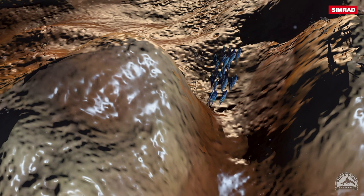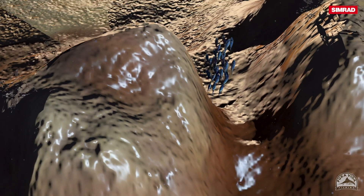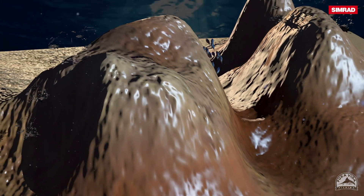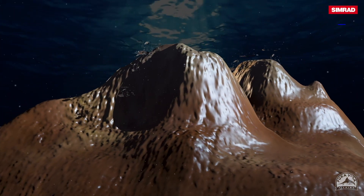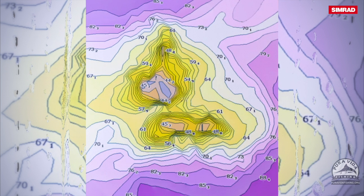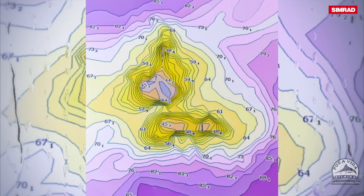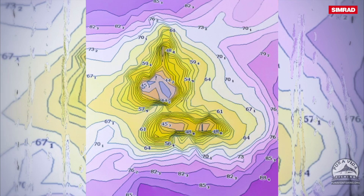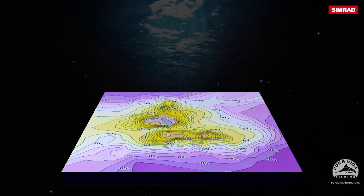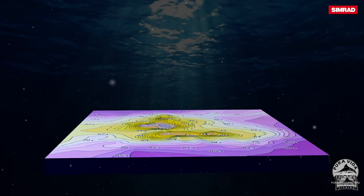In order to correctly understand bathymetric charts, we will need to comprehend that all the concentric images are sectional drawings of the slopes and peaks of the underwater mountains.